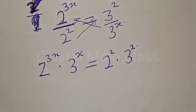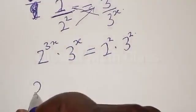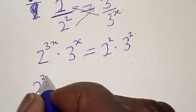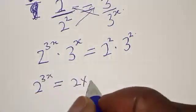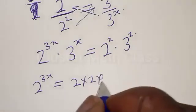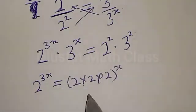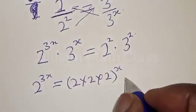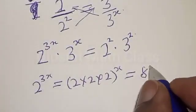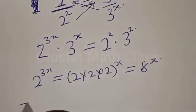Remember, 2 raised to power 3x can be expressed as (2 times 2 times 2) raised to power x. Now 2 times 2 is 4, and 4 times 2 is 8, so we get 8 raised to power x.